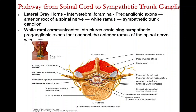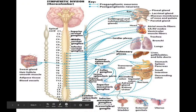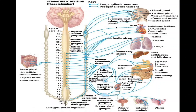The pathway from the spinal cord to the sympathetic trunk ganglia goes from the lateral horns through the intervertebral foramina to preganglionic axons, then through the anterior root of the spinal nerve and the white ramus to the sympathetic trunk ganglion. The white rami communicantes are structures containing sympathetic preganglionic axons that connect with the anterior ramus of the spinal nerve. A diagram shows sympathetic nerves coming out of the trunk, going to the ganglion, and then to their effectors.